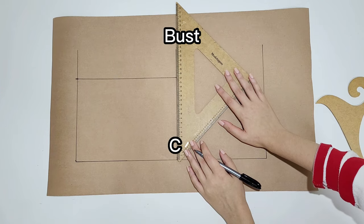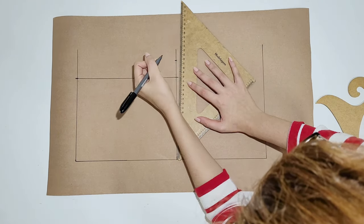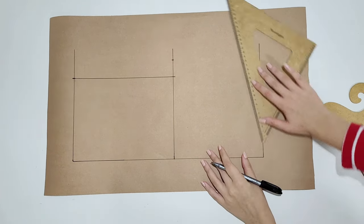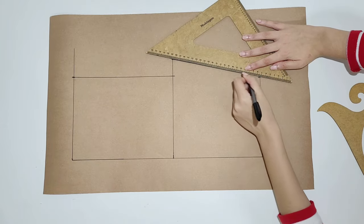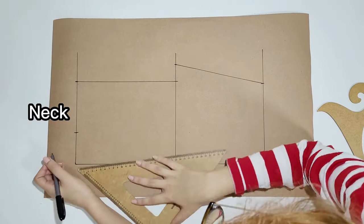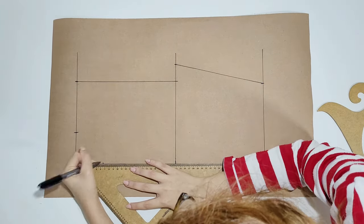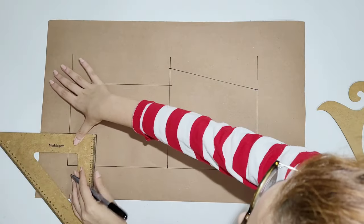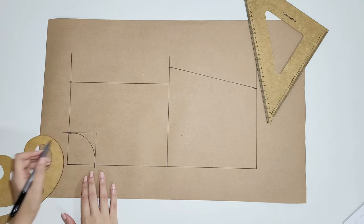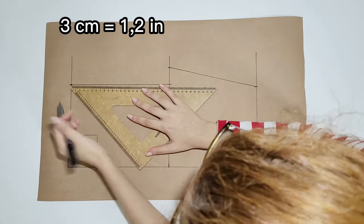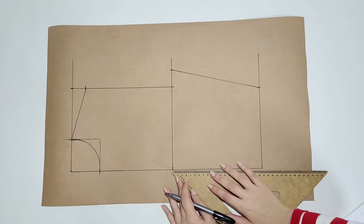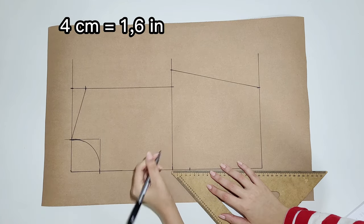Now mark the bust on point C and the waist on point B and connect the dots. Now mark the neck measurement to the side and down. And make a square to guide you when drawing the neckline circle. Now lower 3 cm here for the shoulder drop and connect to the neckline. And lower 4 cm here and draw the bust line.